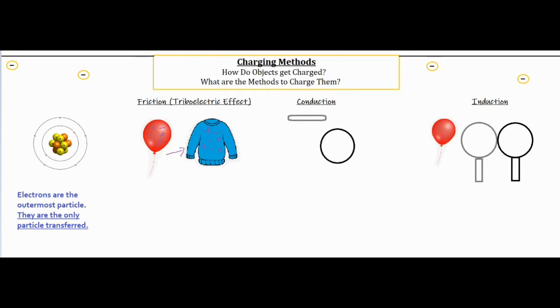Now if you rub the two together, because of their differences in the way they hold electrons the sweater is going to start transfer electrons over.